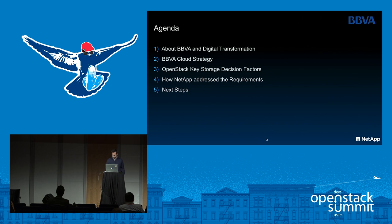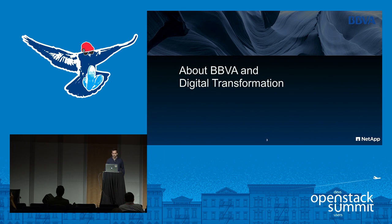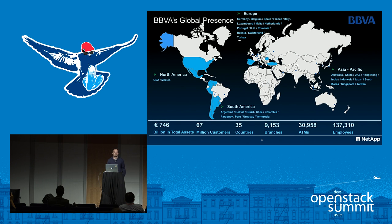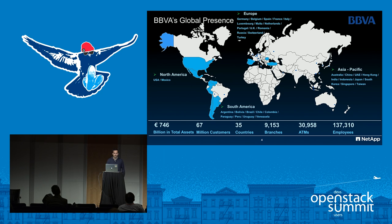I would like to explain why a bank like ours, and especially a storage department, is here on the journey to OpenStack. BBVA is a global financial institution providing financial services in 35 countries to 67 million customers. We are one of the biggest banks in Spain, and the biggest financial institution in Mexico with our bank called Bancomer. We also have a presence in South America, as well as in the Sunbelt region of the United States, and we are one of the biggest shareholders in a bank in Turkey.